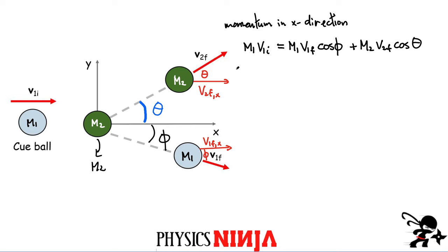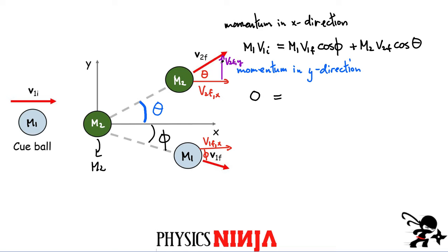We also need an expression for momentum conserved in the vertical, y-direction. This one is a little easier: initially the cue ball is only moving in the x-direction and the other ball isn't moving, so we have zero momentum in the y-direction before the collision. After the collision, both velocity vectors have y-components, giving momentum in the vertical direction for each object.